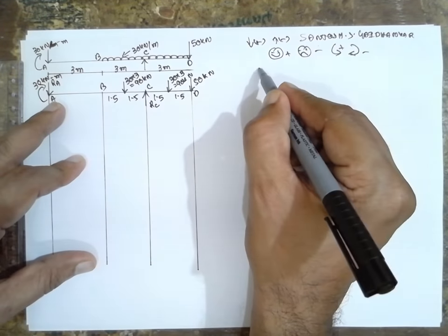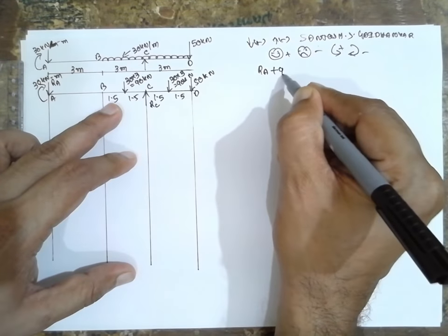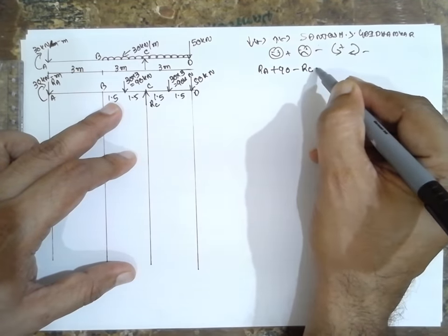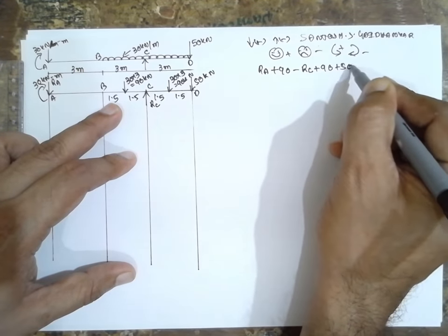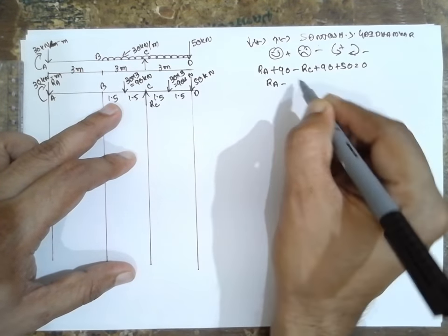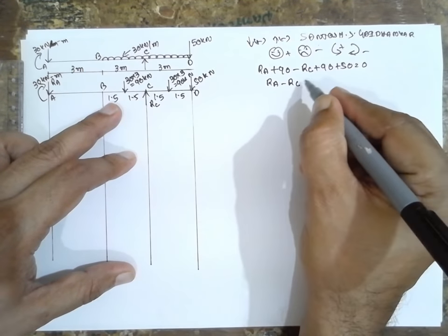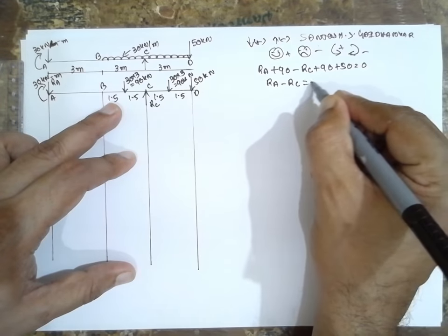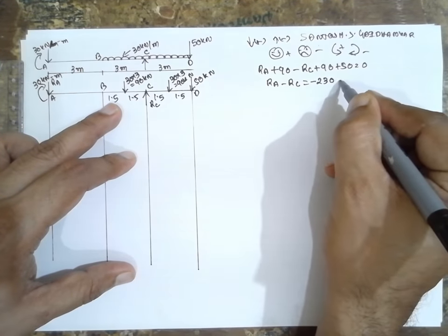For vertical equilibrium: RA plus 90 minus RC plus 90 plus 50 is equal to zero. Therefore RA minus RC equals minus 230. This is equation 1.